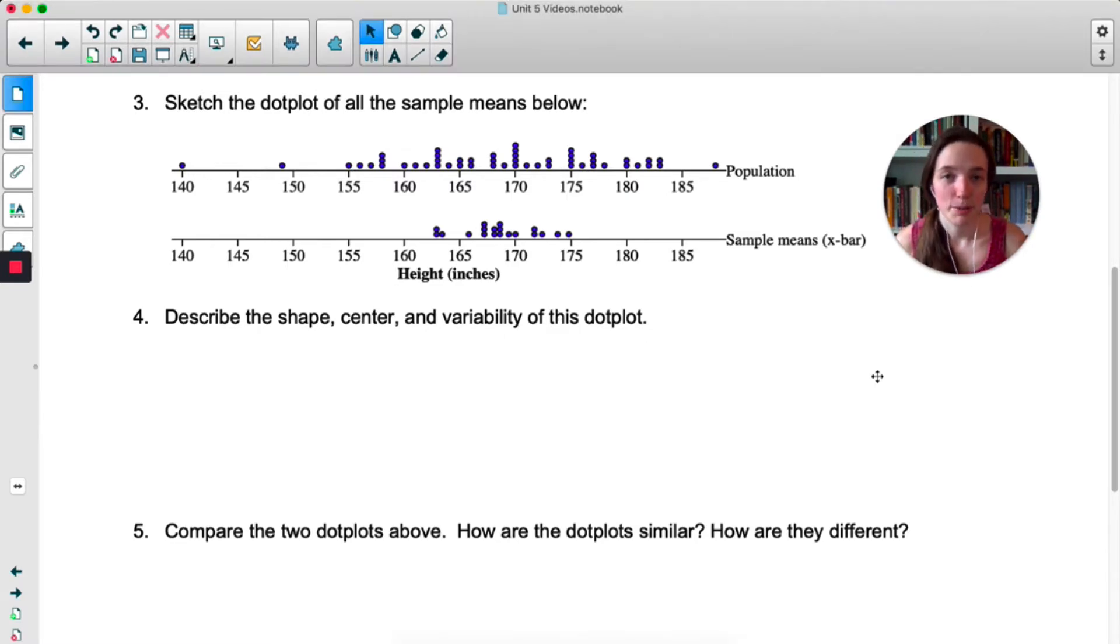So this is an approximate sampling distribution of x-bar. If it were a true sampling distribution of x-bar, we would have every possible sample of size five, but obviously that is not realistic. So it is an approximate sampling distribution of x-bar, where each dot represents the sample mean from one sample of 50.